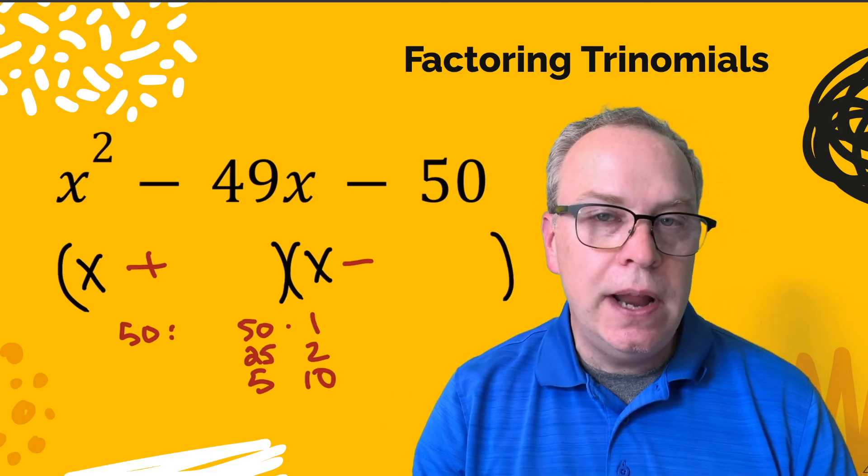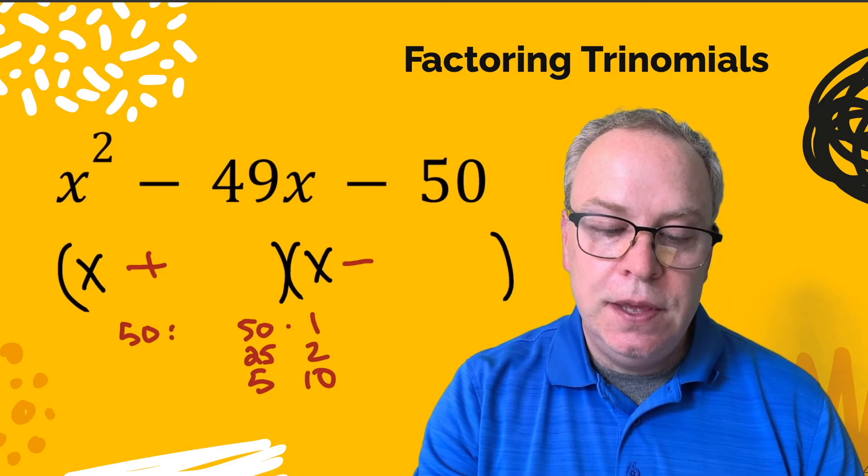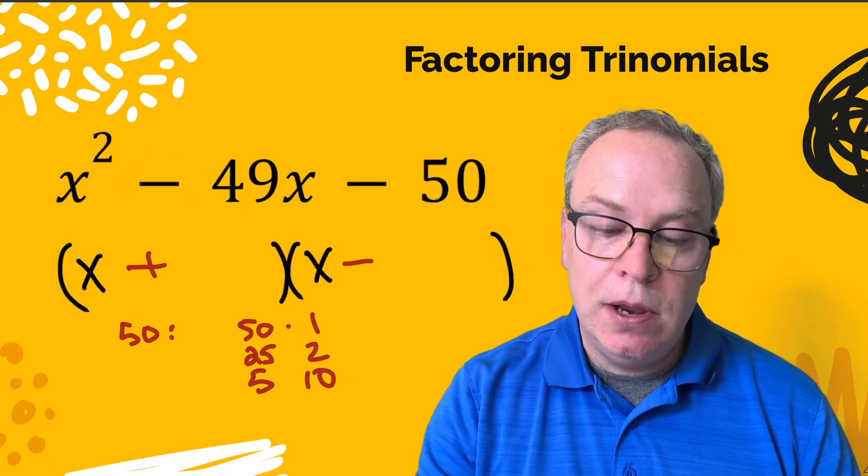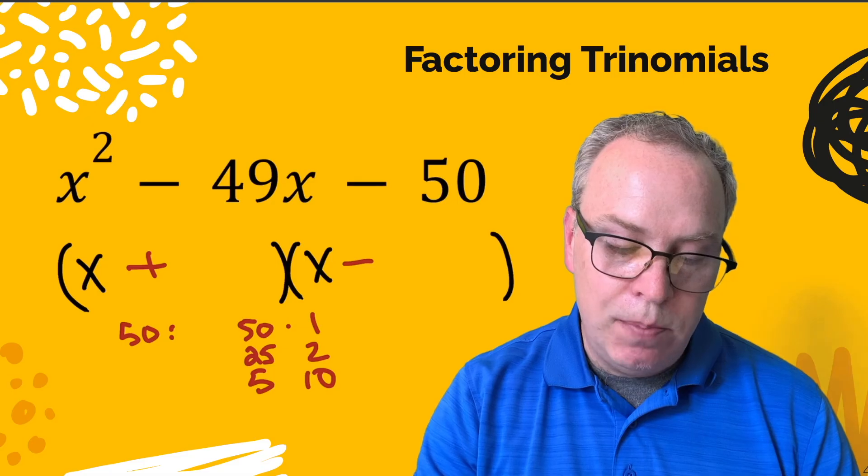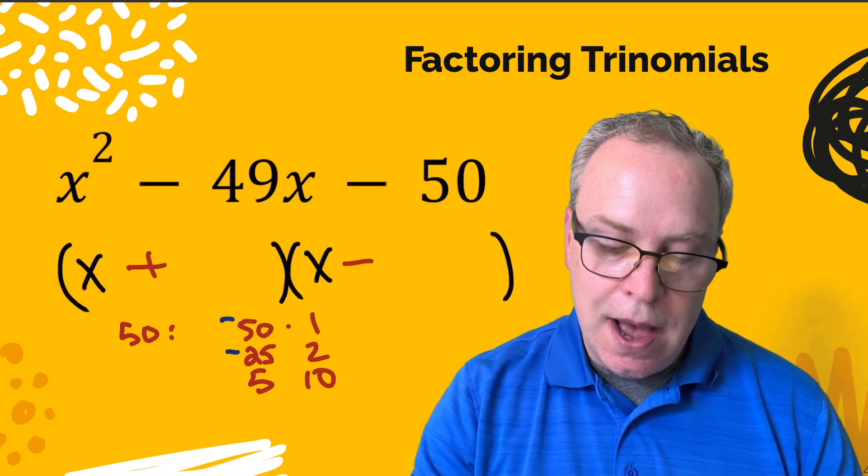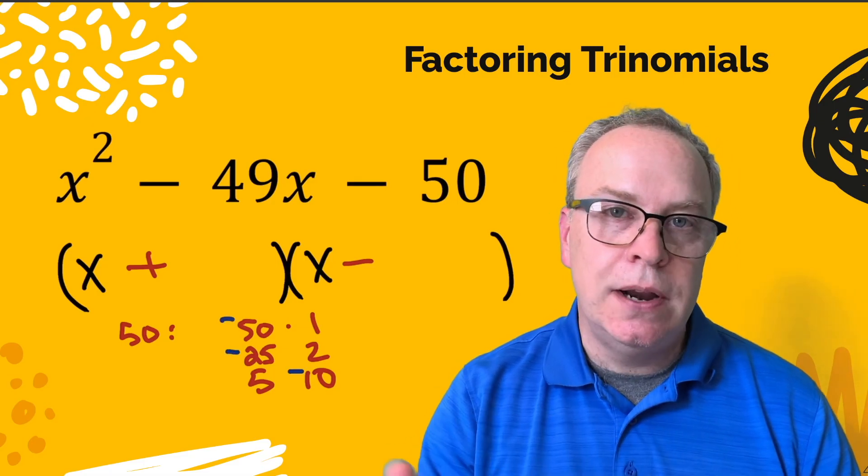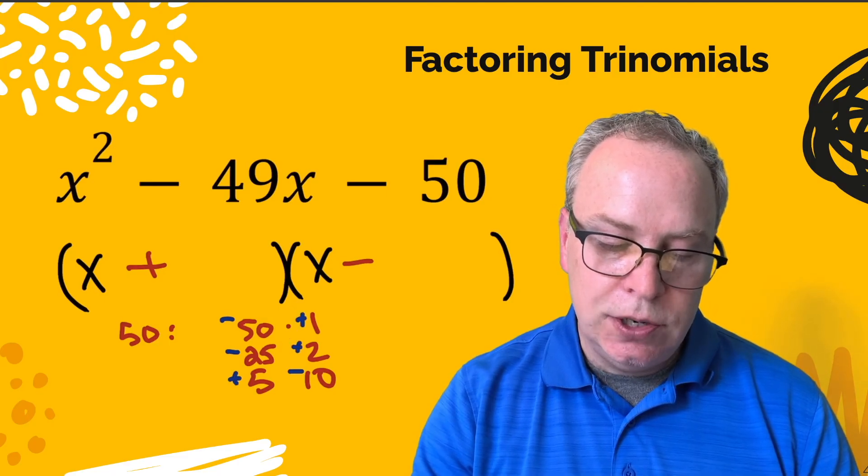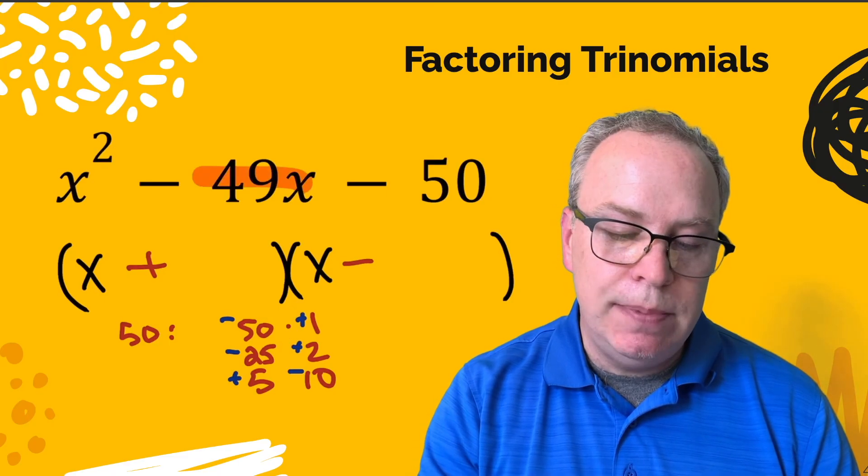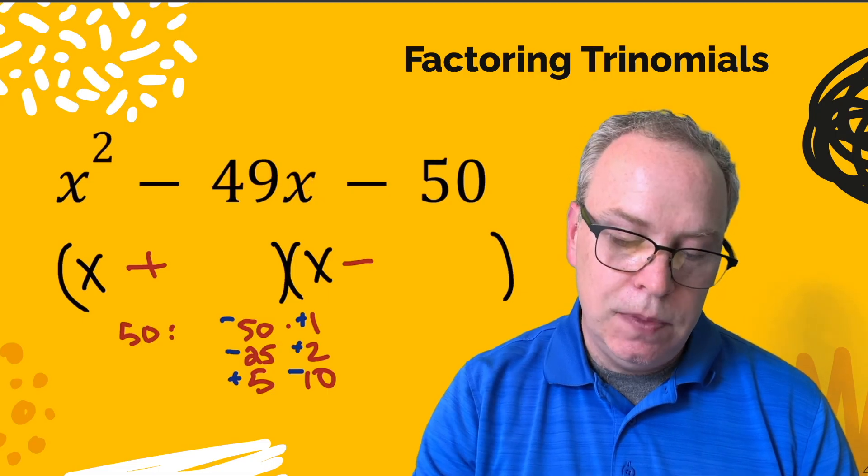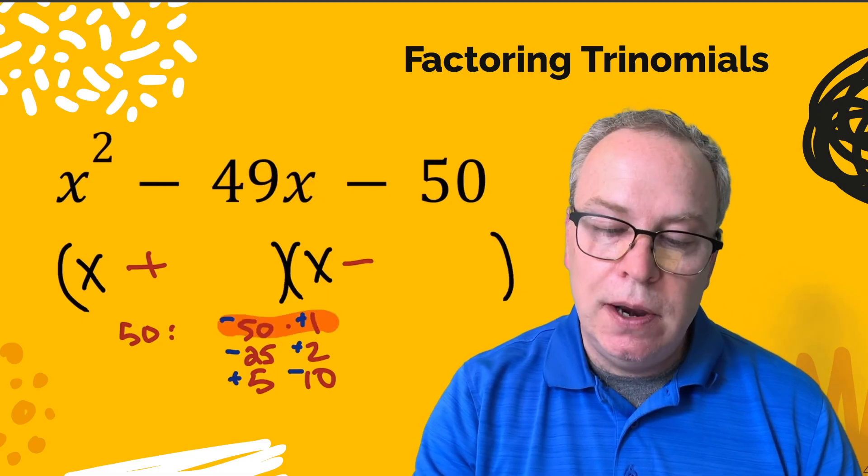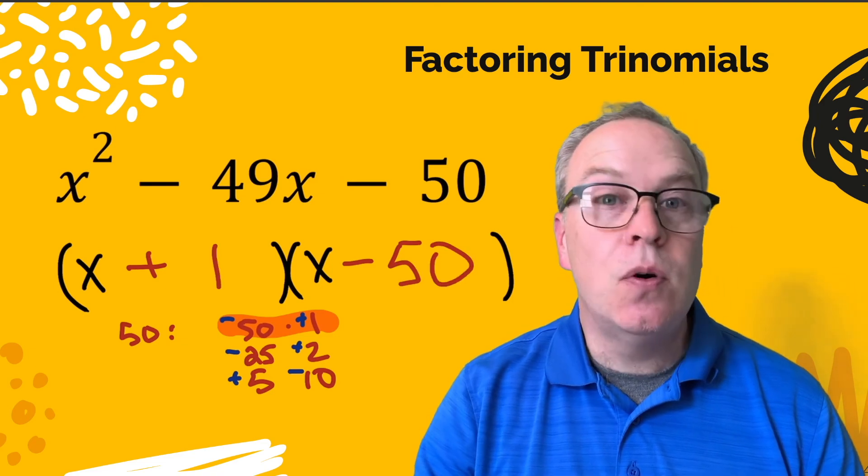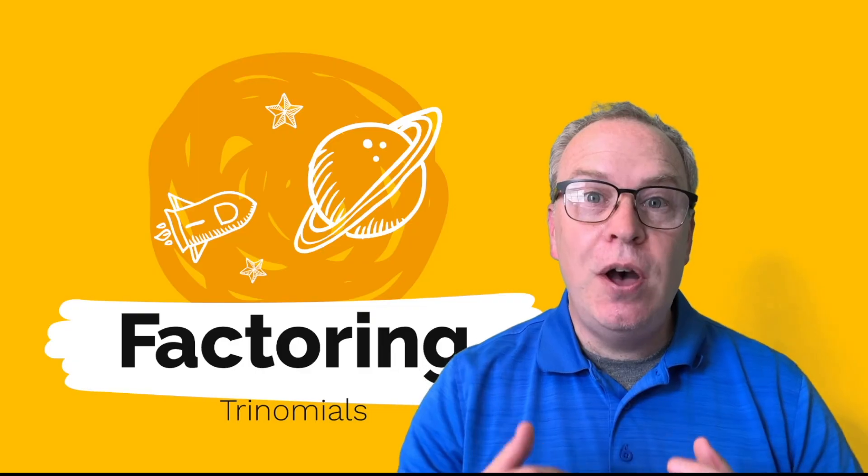Now none of those add up to 49 of course. This time we want to make a negative middle term. So I'm going to come down here and I'm going to put a minus sign on all of the bigger numbers out of the two pairs. So which of those combinations, which of those three add up to be negative 49? And it sure looks like that one there. So I'm going to fill that in. The 50 needs to be the negative and the 1 needs to be the positive. Well, there you go.